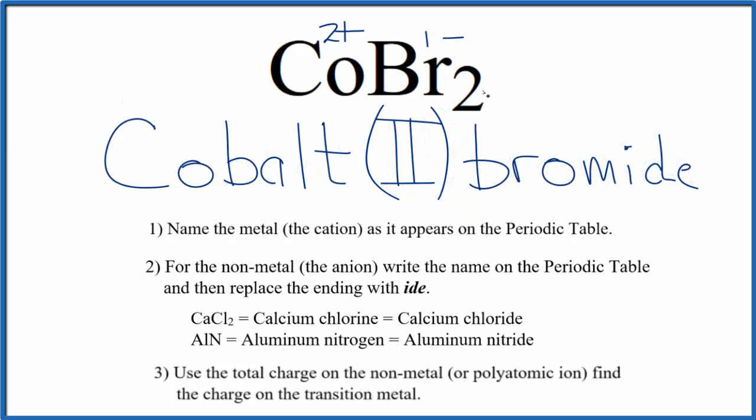So the name for CoBr2 is cobalt 2 bromide. The 2 here, the Roman numeral 2, is because of the 2 plus on the cobalt.